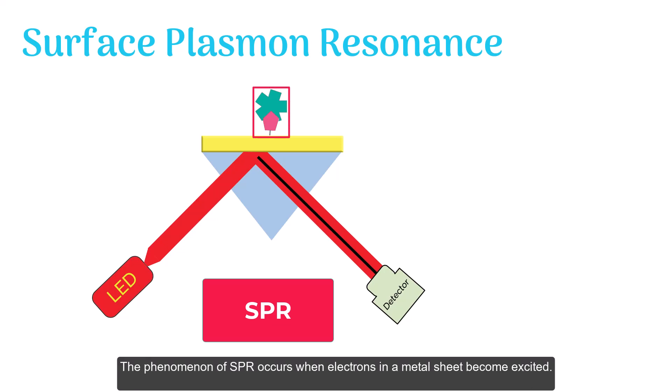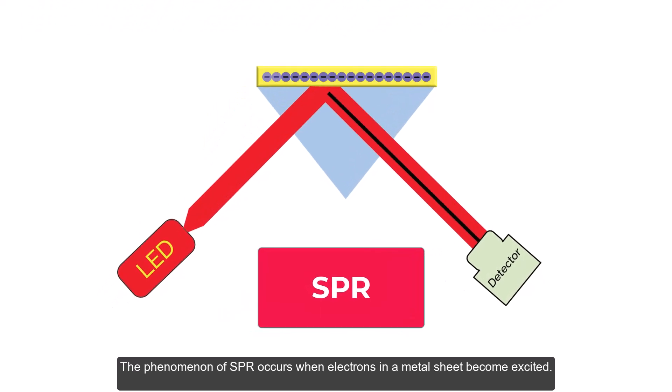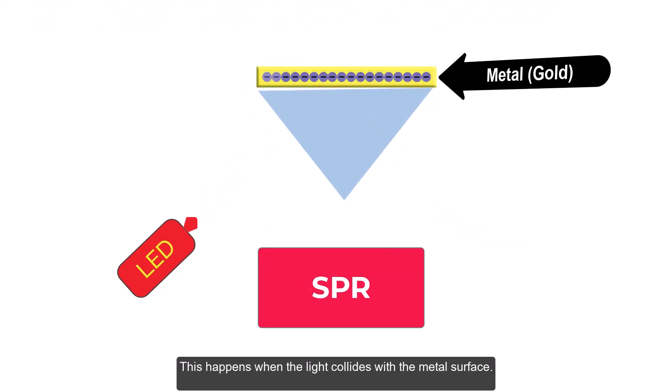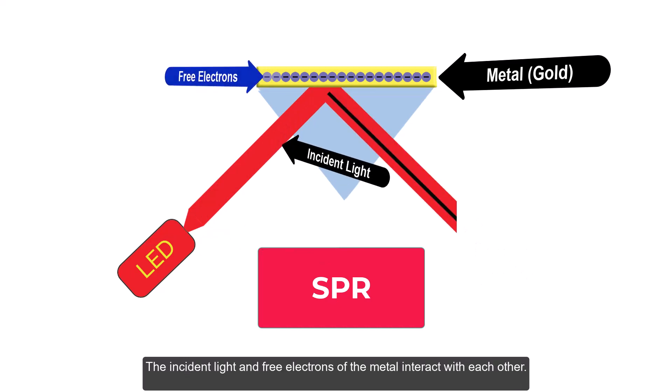The phenomenon of surface plasmon resonance occurs when electrons in a metal sheet become excited. This happens when the light collides with the metal surface. The incident light and free electrons of the metal interact with each other.